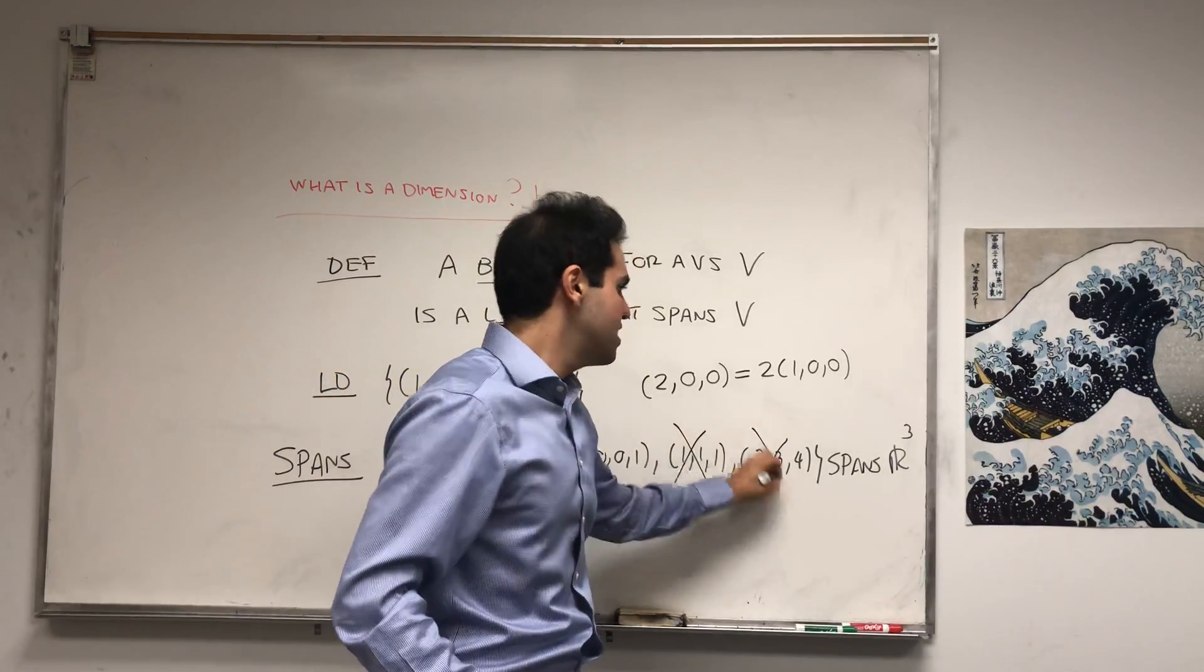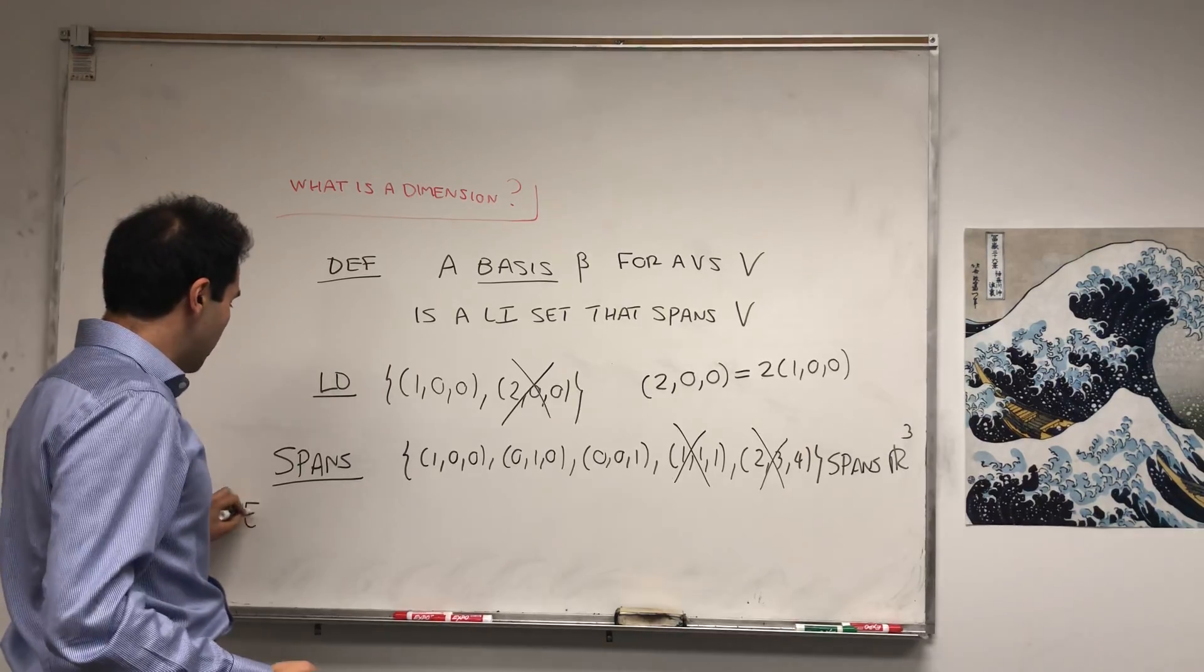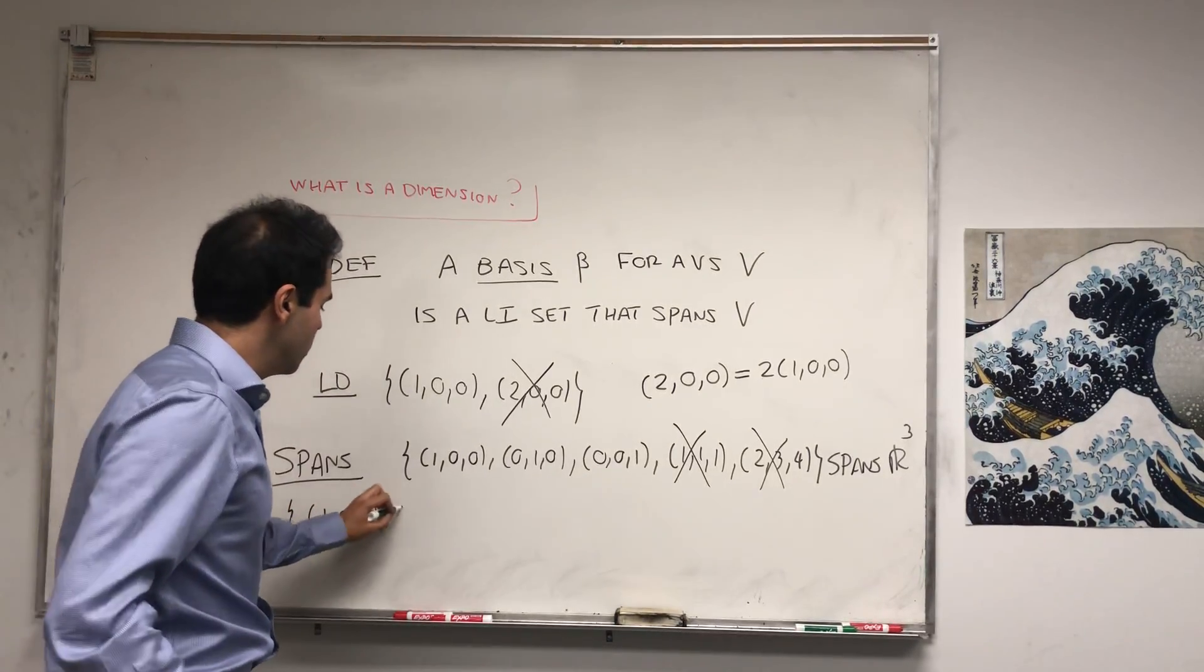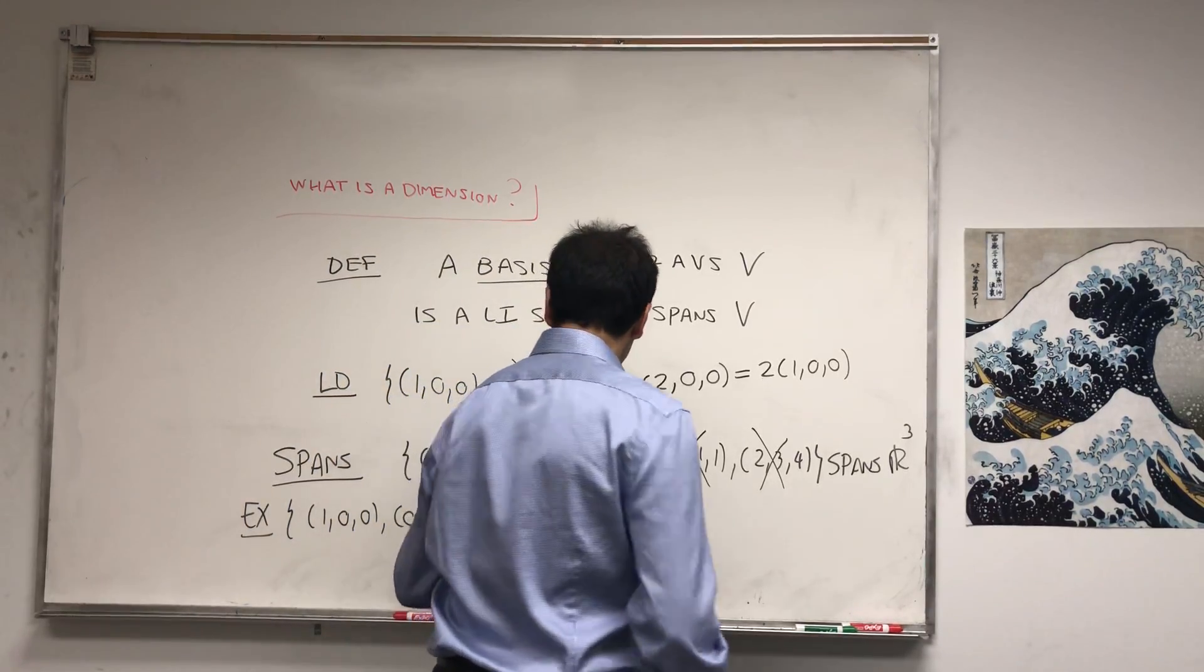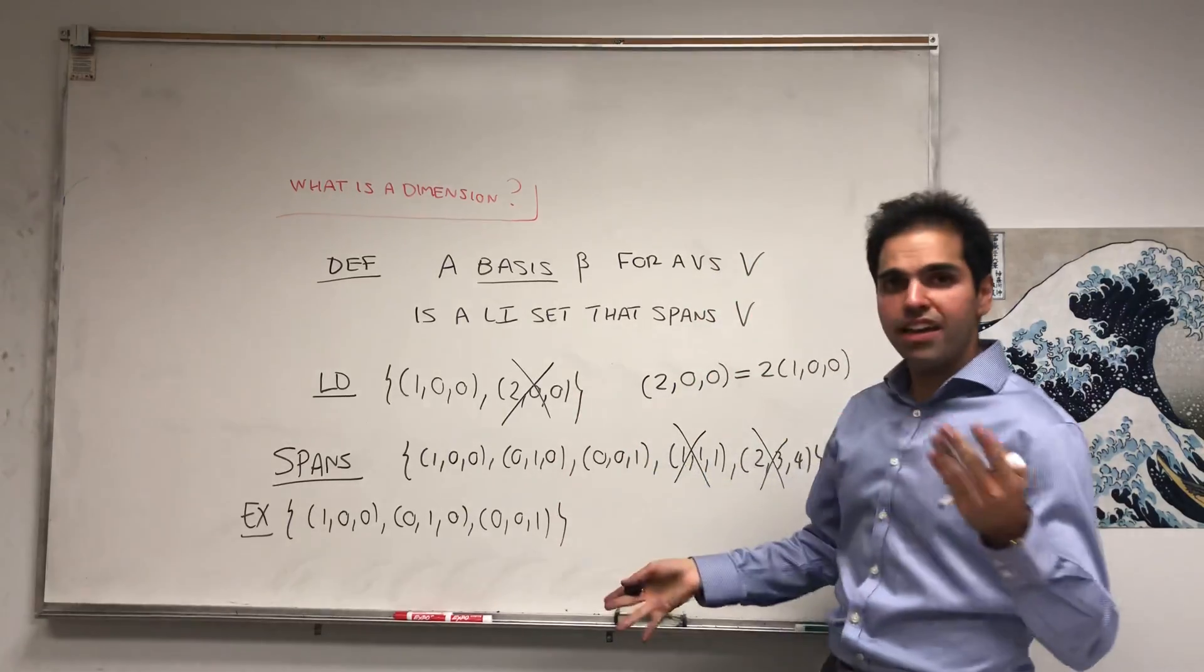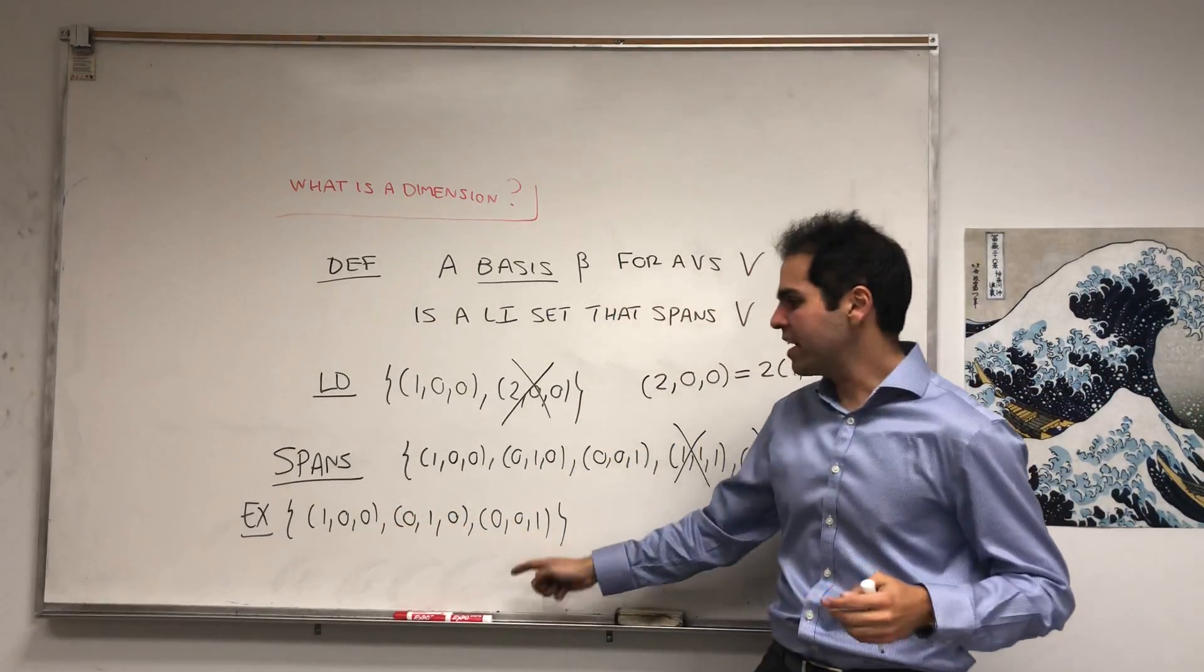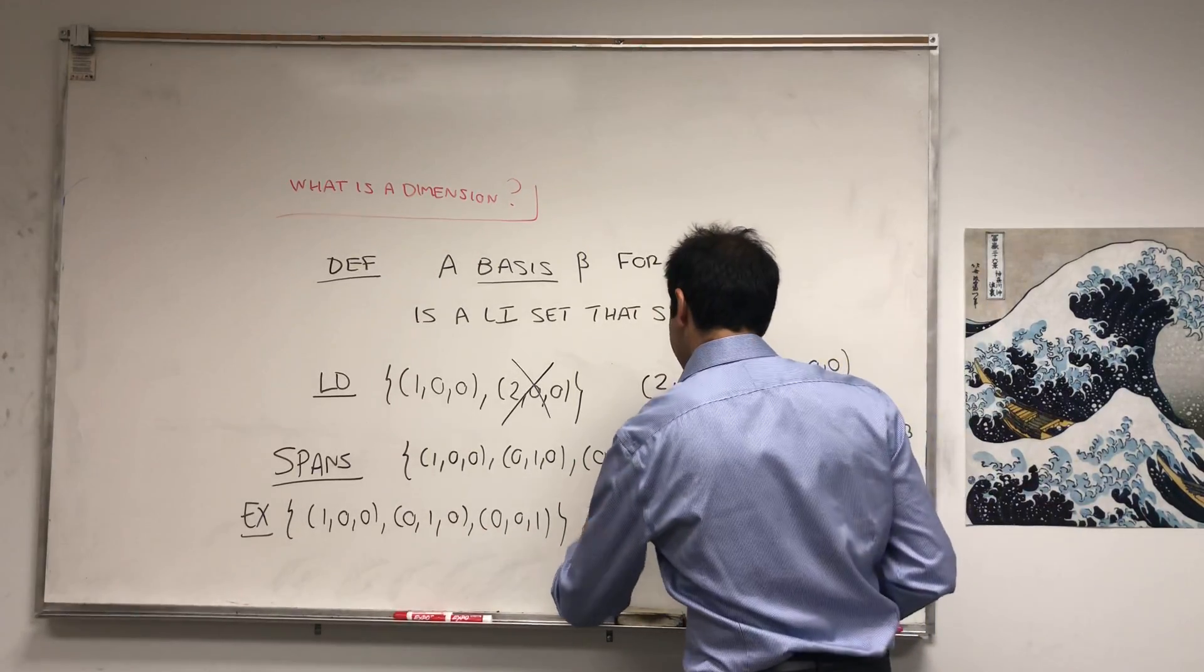So an example of a basis is (1,0,0), (0,1,0), and (0,0,1). Because any point you can express in terms of those three vectors, and they're not redundant. So this is a basis.